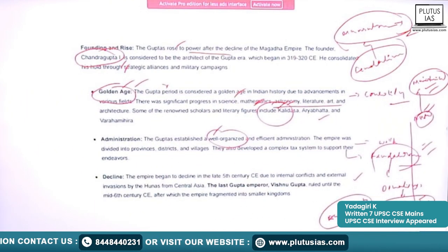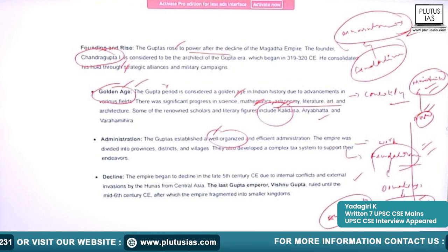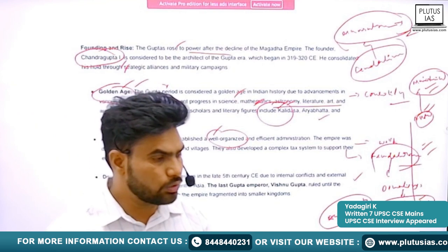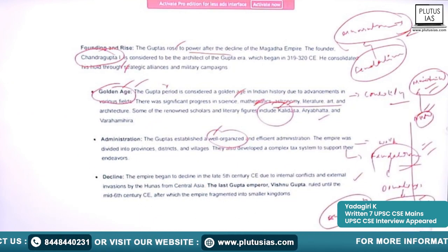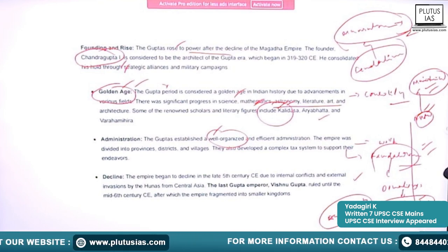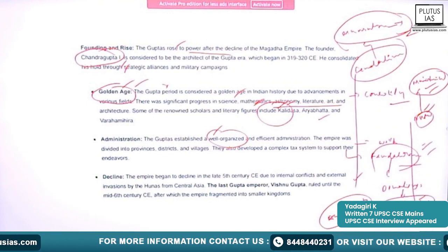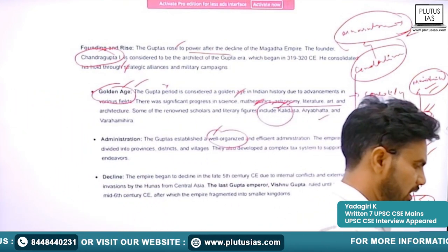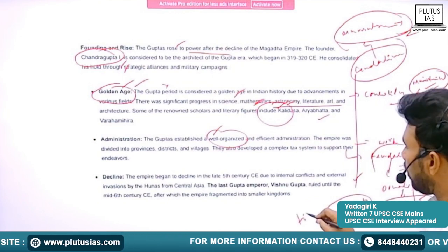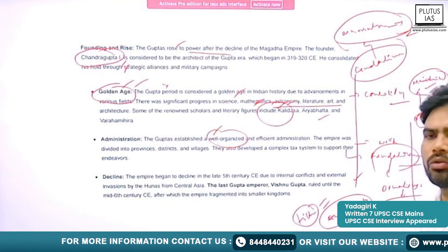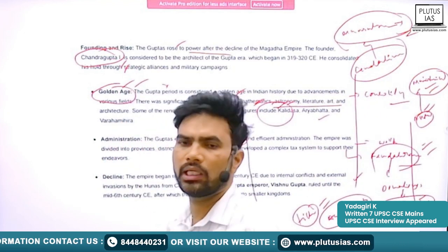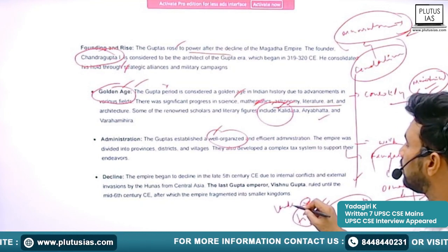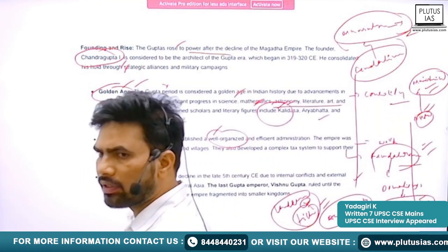The mansabdari crisis arose largely due to mismanagement: nobles were rising in rank but there was no land available to give them. This is considered one of the reasons for the decline of the Mughal Empire, showing how everything is connected from the Gupta period to the Mughal period through feudalism. This system was not favorable to common people who tilled the land, which is why after independence, the Indian government brought land reforms.